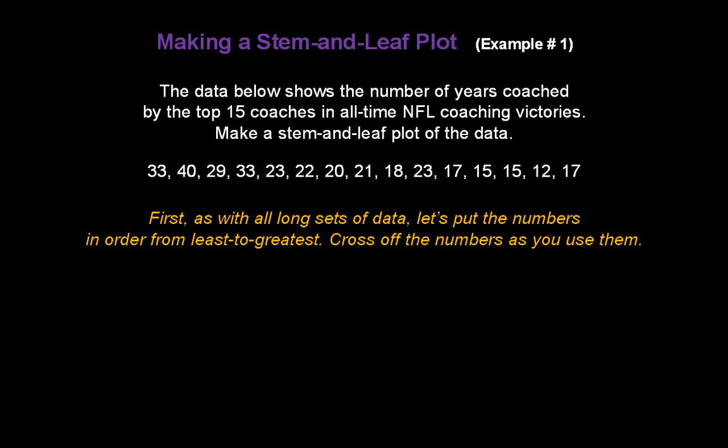So let's take a look at the data. What's our smallest number up here? It looks to be 12. So I'm going to write down 12 and cross it off from my original list. And I'm going to keep doing this all the way along. The next number is 15. There's another 15. Looks like we have a 17 next, followed by a second 17. There's an 18. And that does it for the teens.